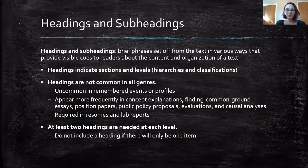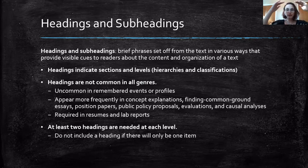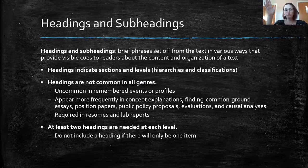Our next cueing-the-reader strategy is using headings and subheadings. These are brief phrases set off from the text that provide visual cues to the reader about the context and organization of the text. Headings indicate sections and levels through hierarchies and classifications — you might have a large, bold word for a general category, and then smaller bold or italicized words below it indicating subcategories that still belong within that larger category.